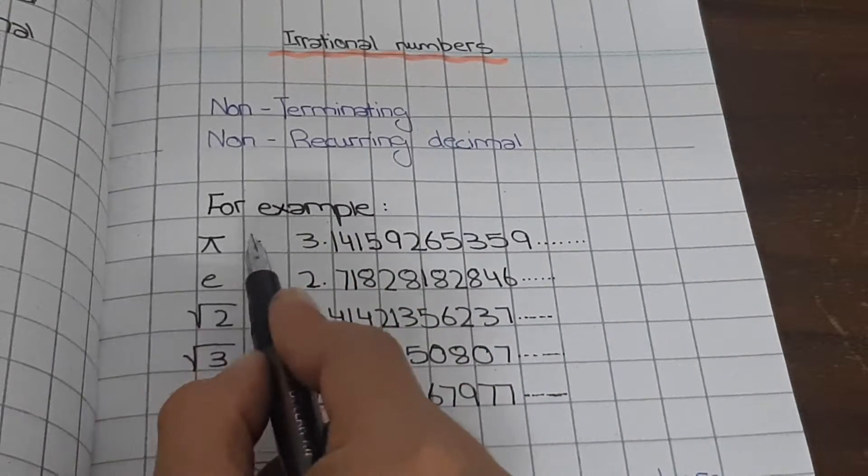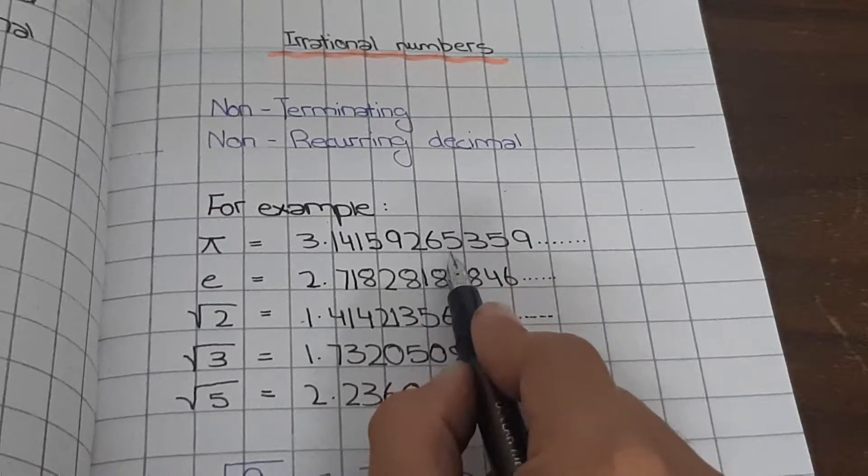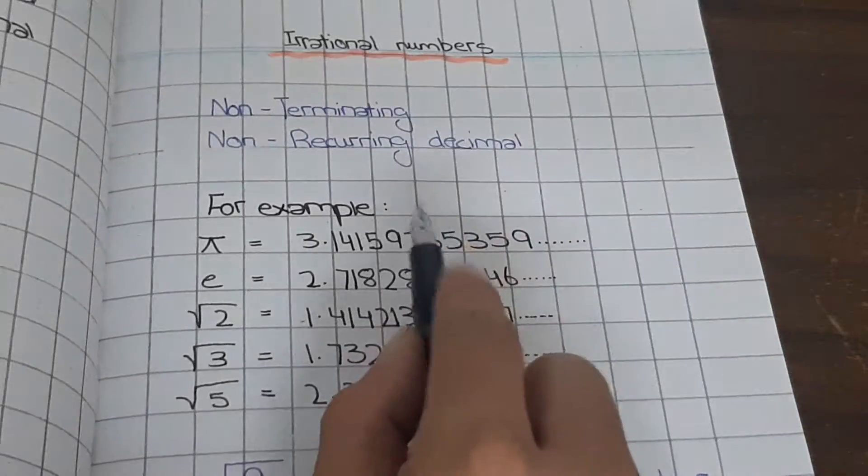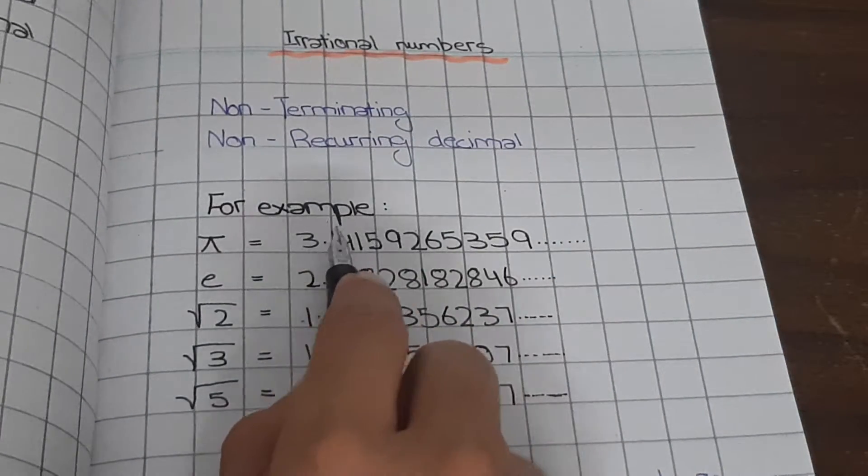For example, pi. The value of pi is 3.14159265359. It is unlimited and it doesn't recur decimals. So, this is an irrational number.